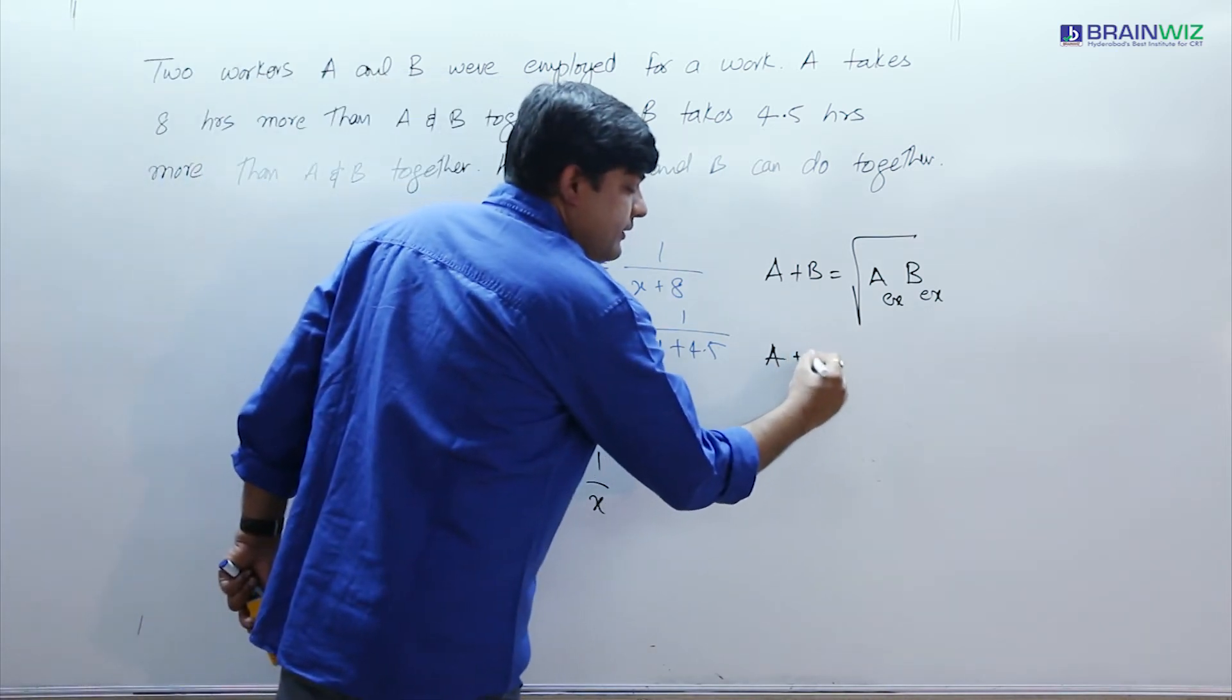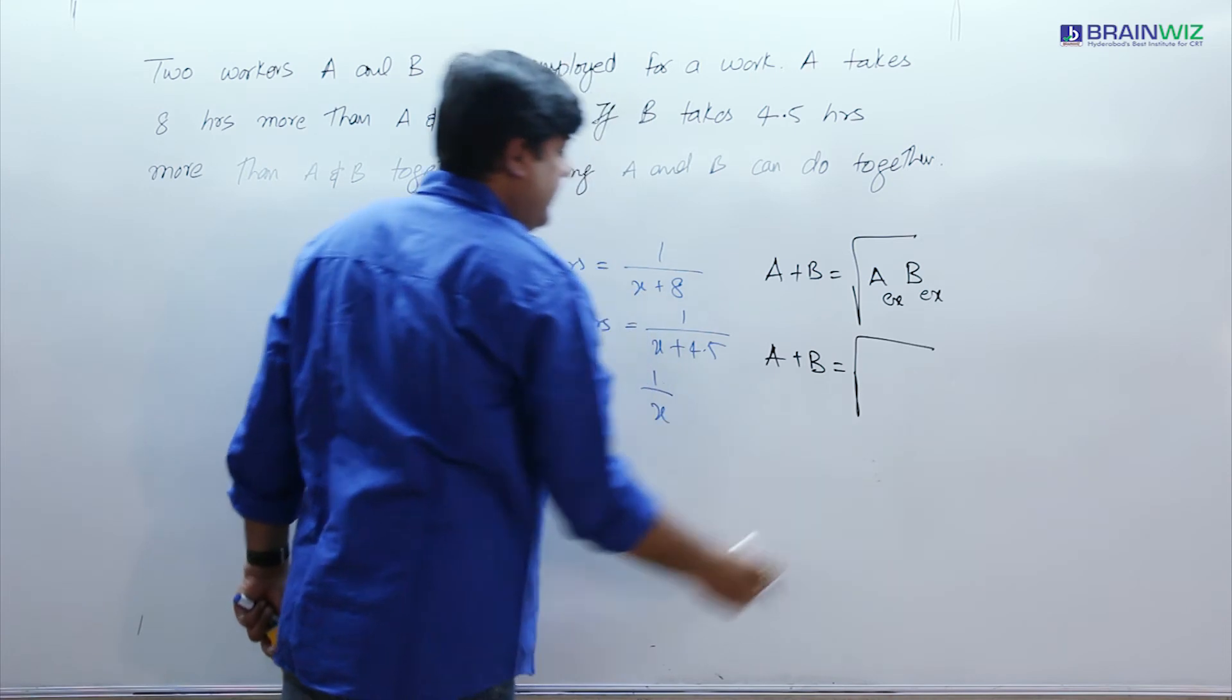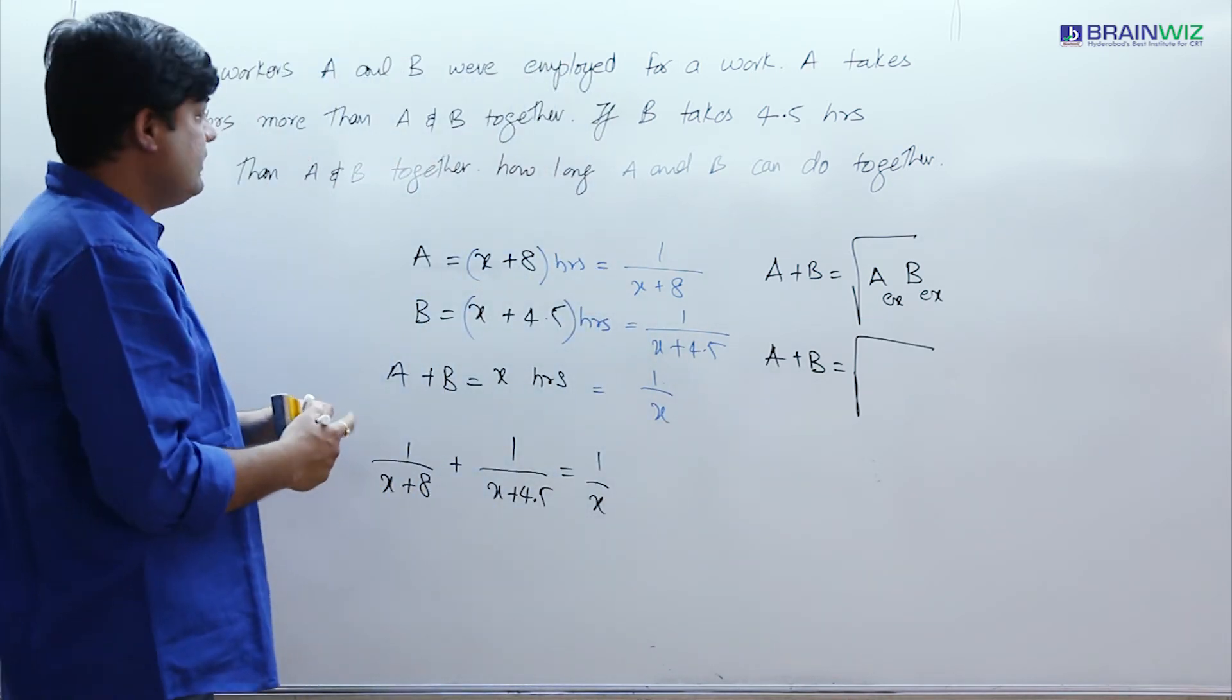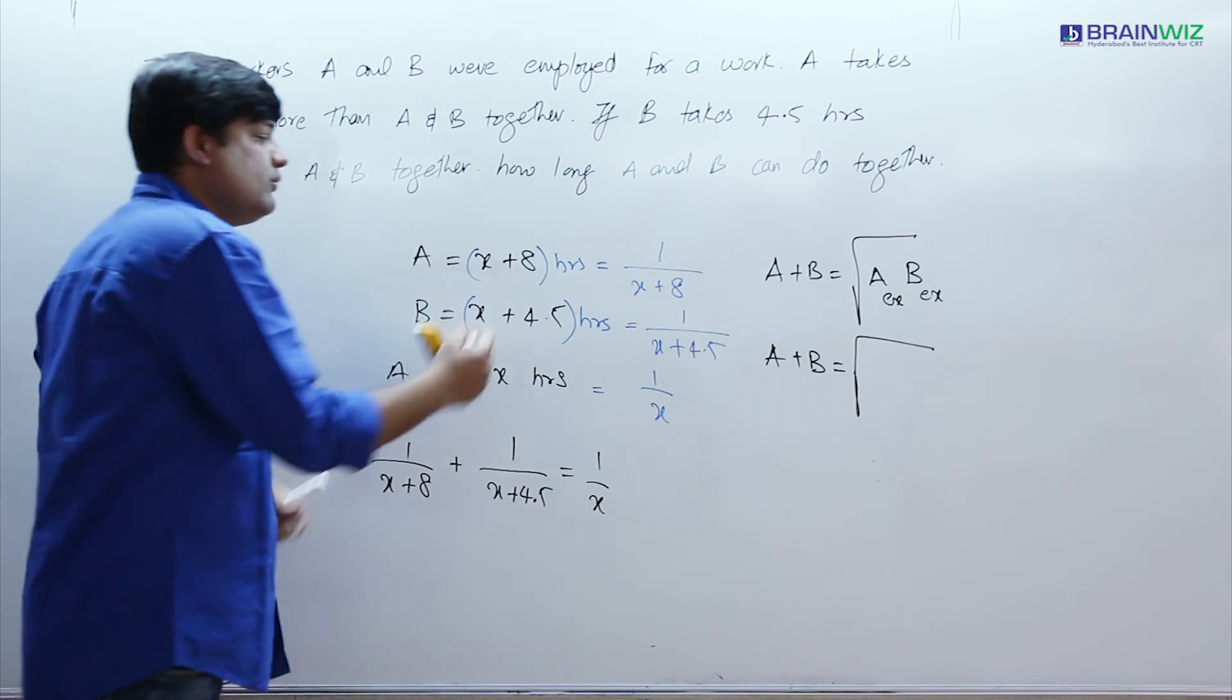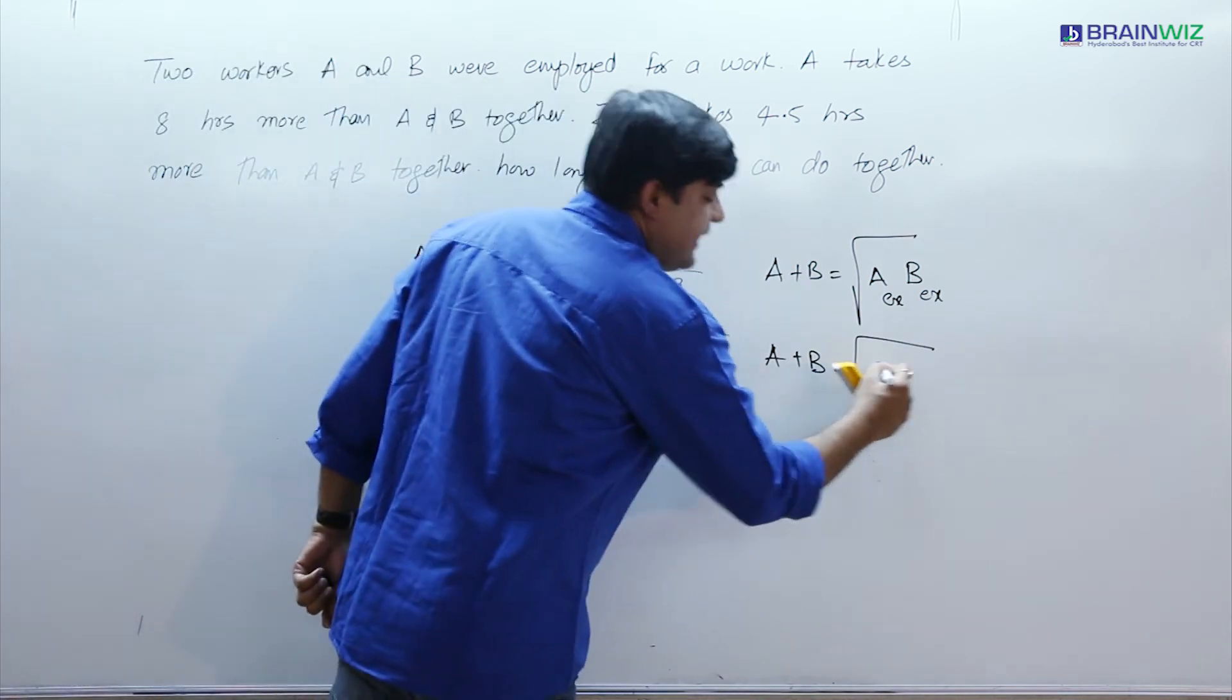So A and B is under root of A's extra. Now have a look here. In this question, compared to A and B, A is taking 8 hours extra. So this is what we have to take into consideration. This is 8.